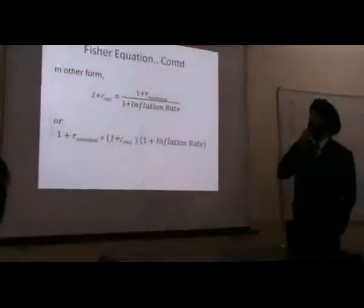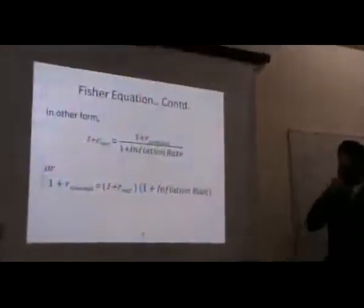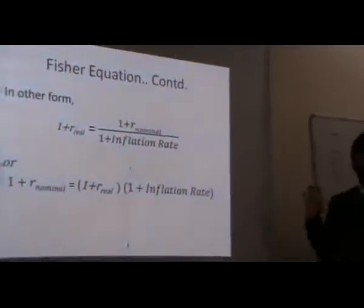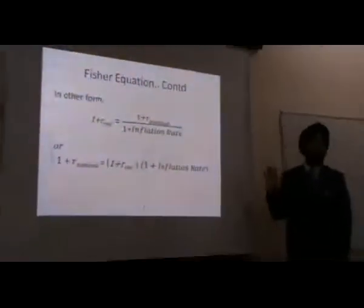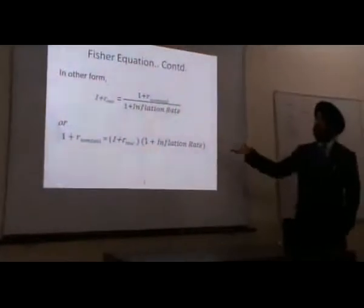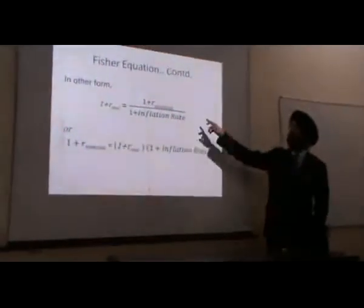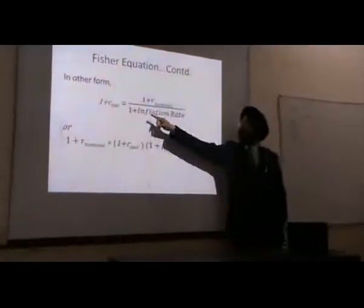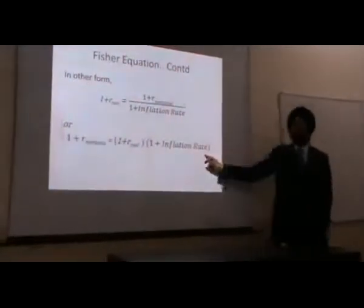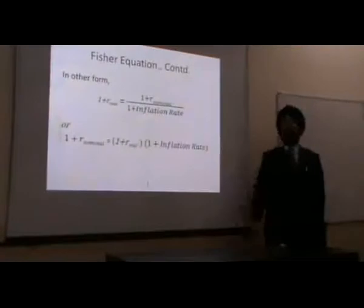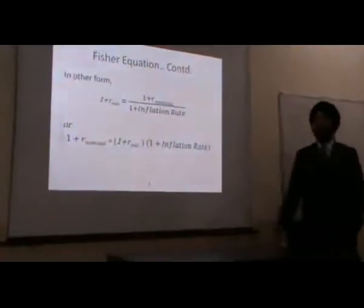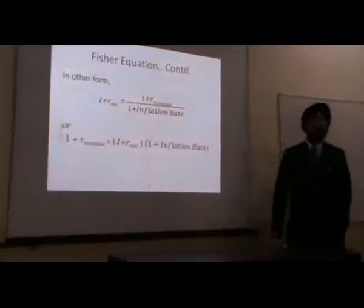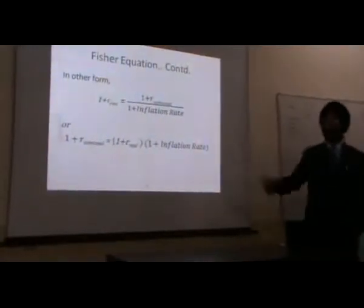So the Fischer equation is: 1 plus R-real equals 1 plus R-nominal multiplied by 1 plus inflation rate. Or you can rearrange it: nominal equals 1 plus real multiplied by 1 plus inflation. So if you need to calculate the nominal cash flow, you multiply the real rate by the inflation factor.